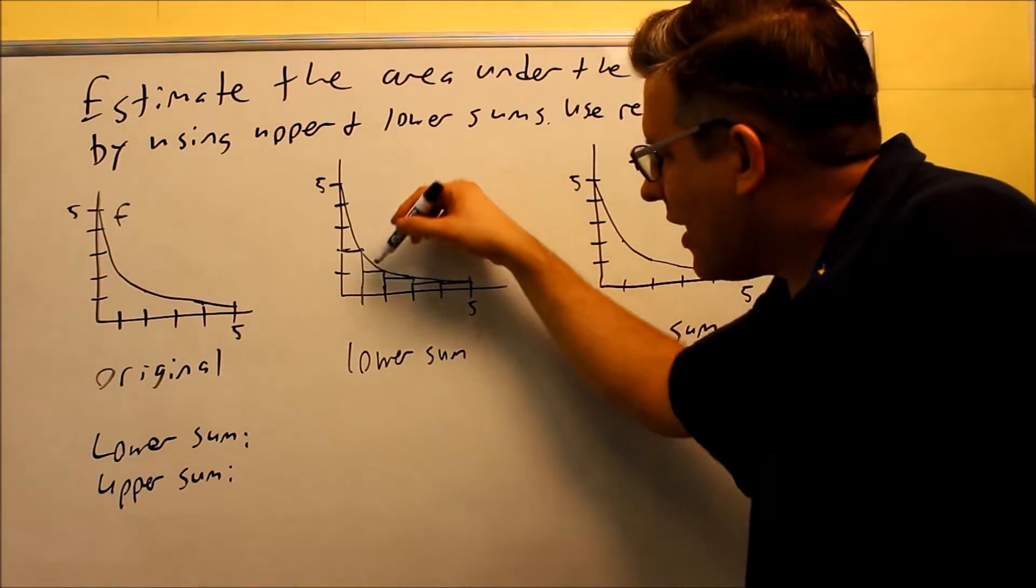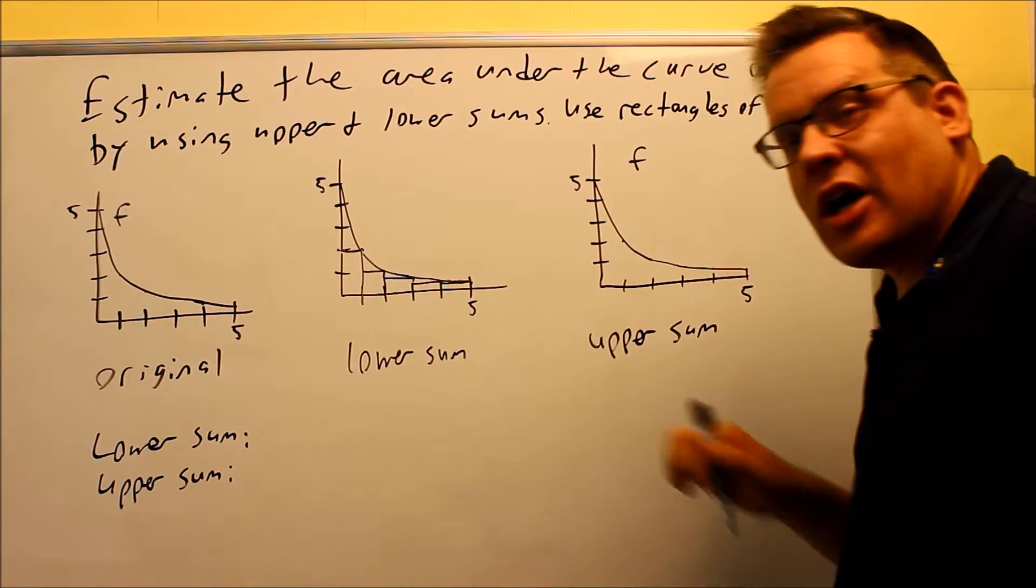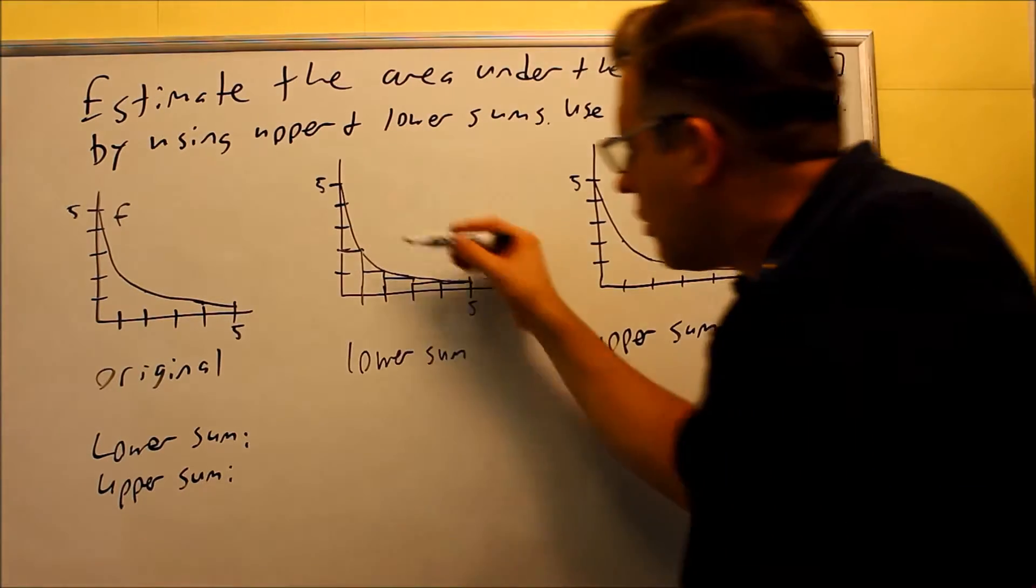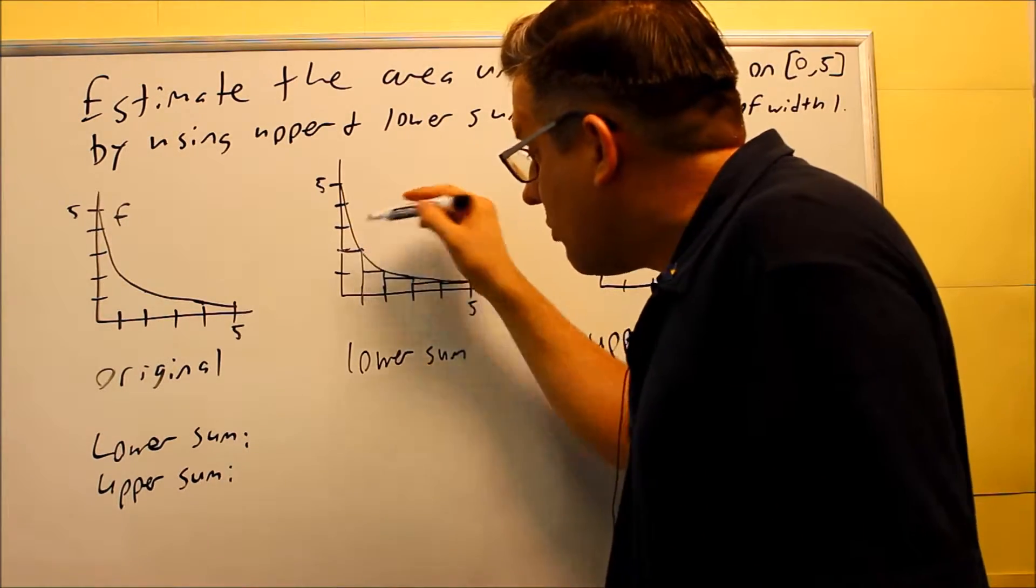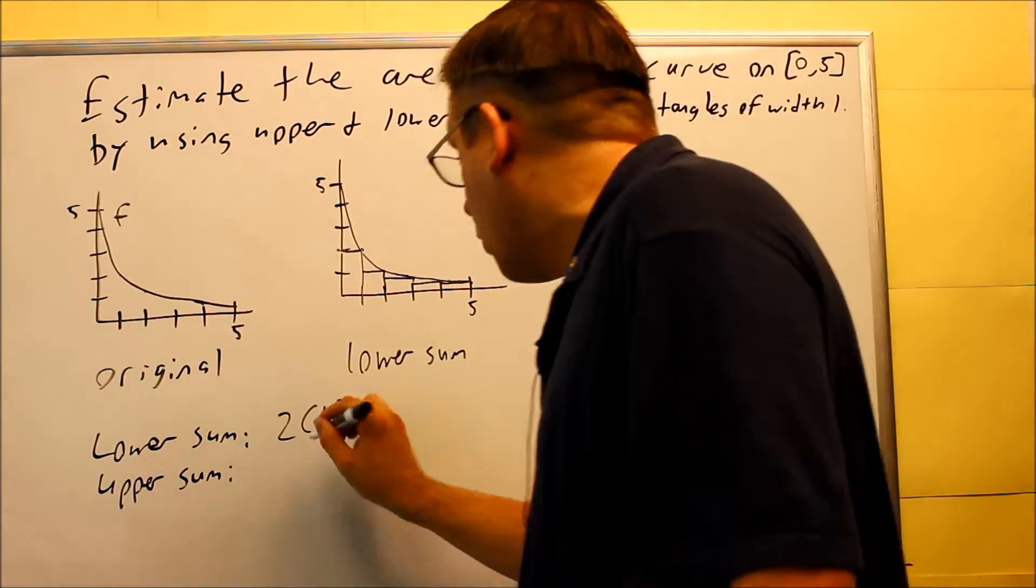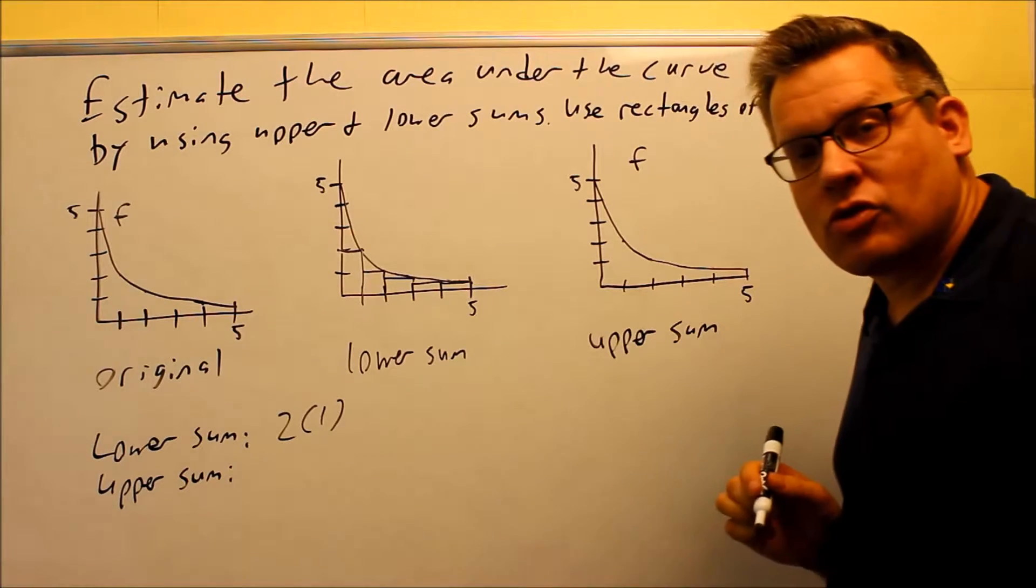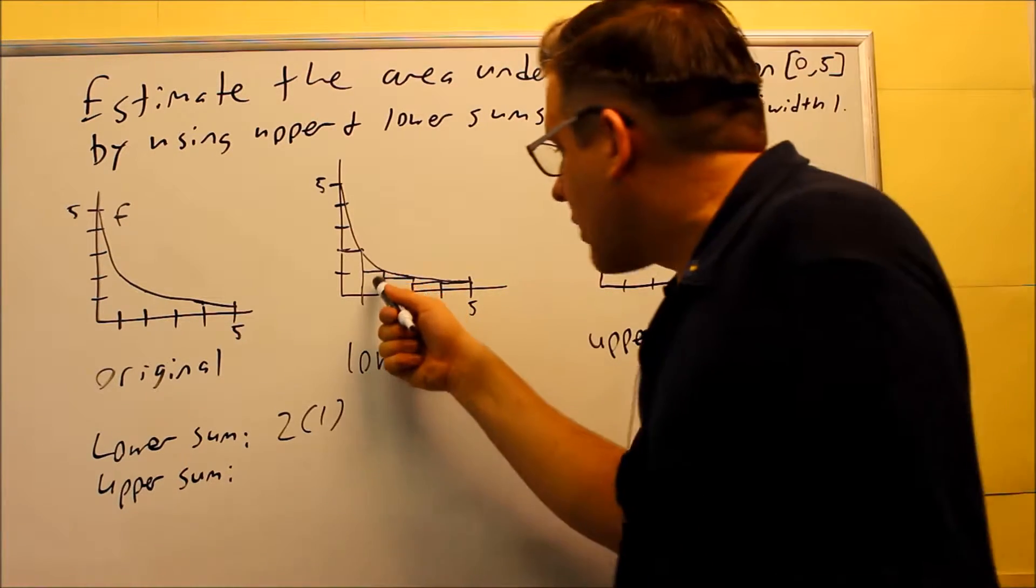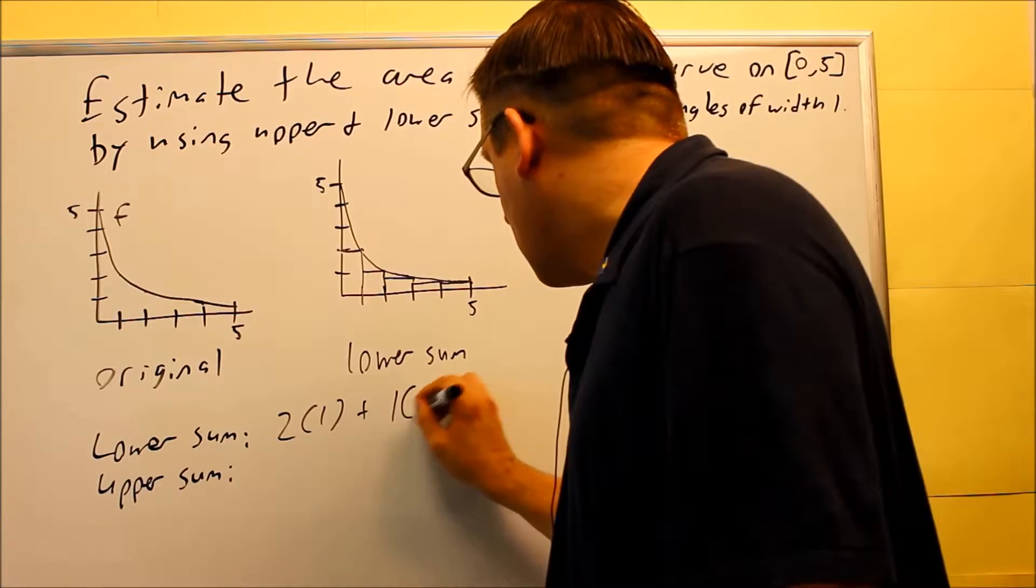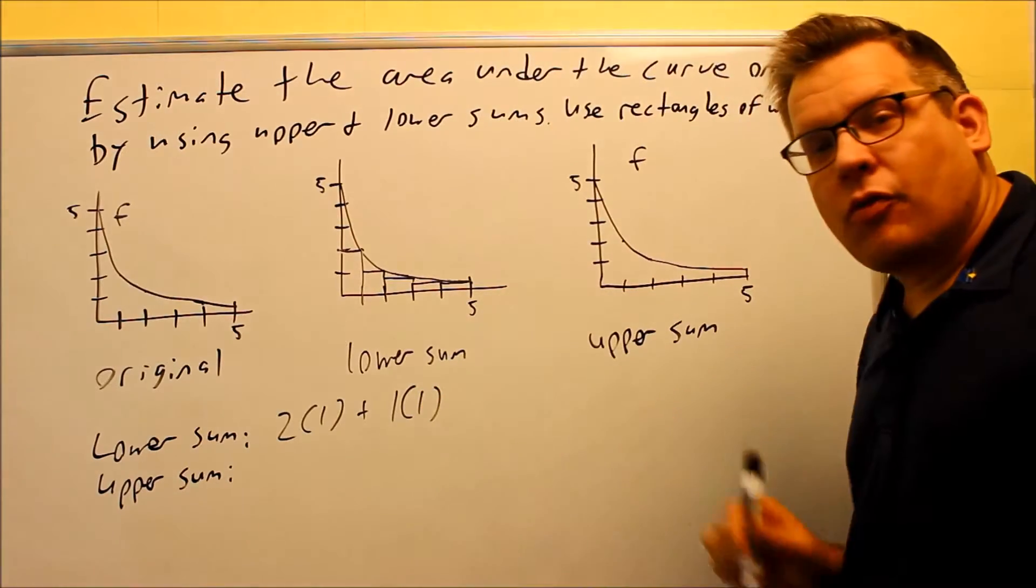We're going to estimate the heights of each of these, and we're going to write this out for lower sums. This first height here, it's going to be exactly 2 with a width of 1, so you're going to do length times width to find the area of that first rectangle. Next, this height here is going to be 1, so height of 1 and a width of 1.